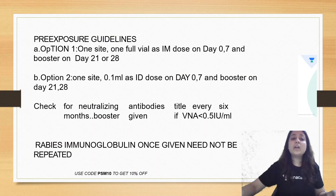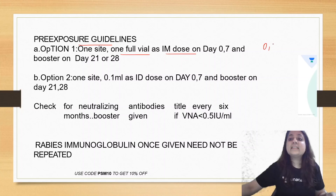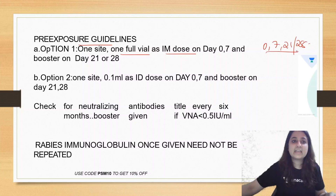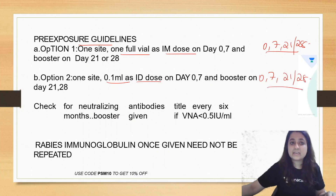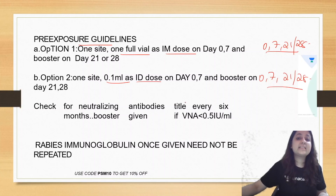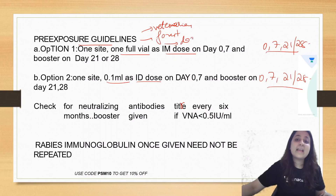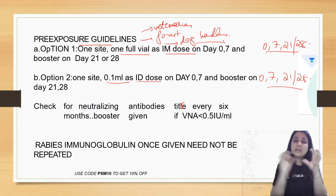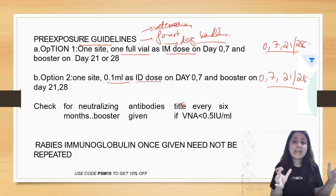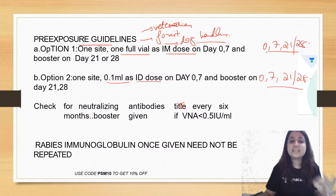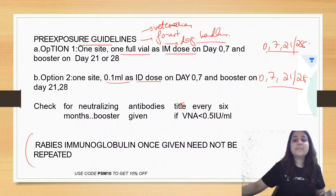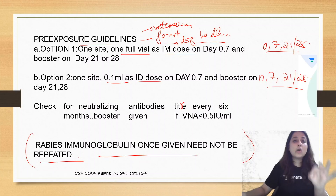Pre-exposure prophylaxis guidelines: option one is one full vial intramuscularly on days 0, 7, and 21/28 days. Option two is 0.1 ml intradermally on days 0, 7, and 21/28 days. You should check for neutralizing antibody titers in people at high risk like veterinarians, forest workers, or dog handlers. If neutralizing antibody titer is less than 0.5 international units per ml every six months, you need to give a booster.